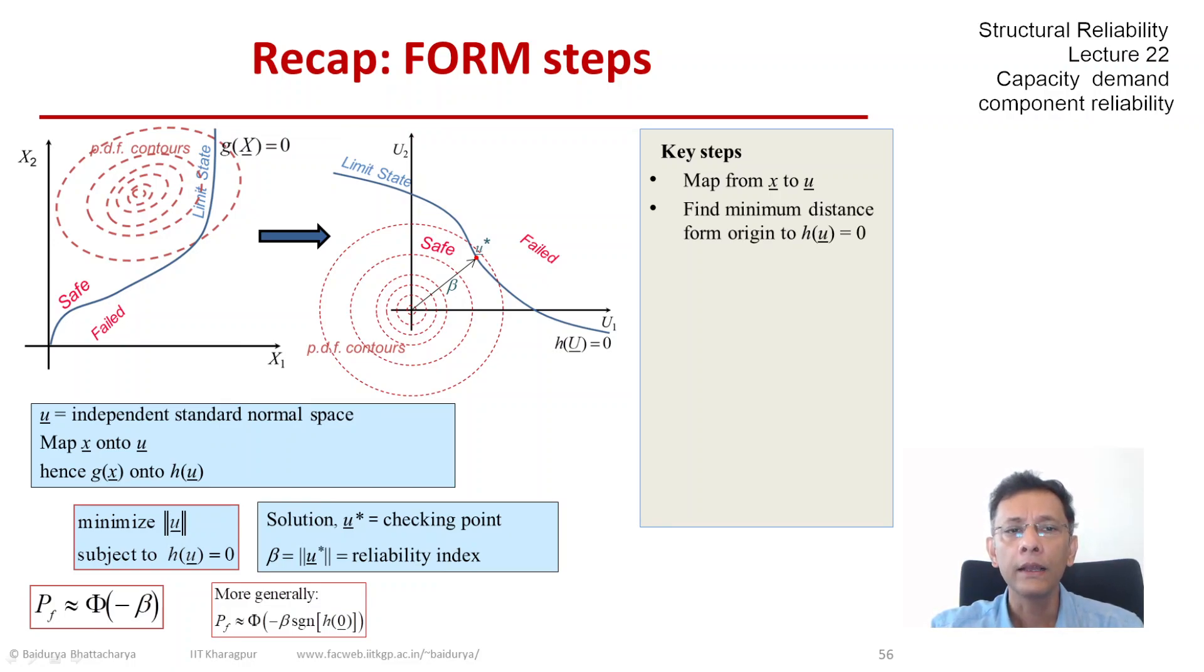And then the next step is the optimization part, which is minimizing the distance. Now, the pros and cons, as I mentioned, that we don't need H in closed form. If there is a method like a finite element program which gives H point by point, that would be okay.